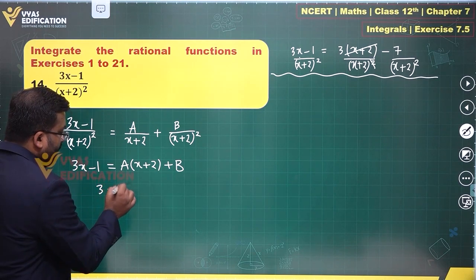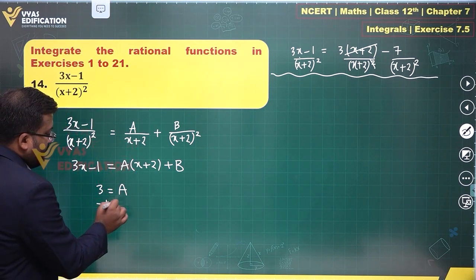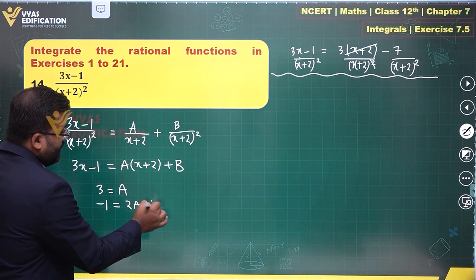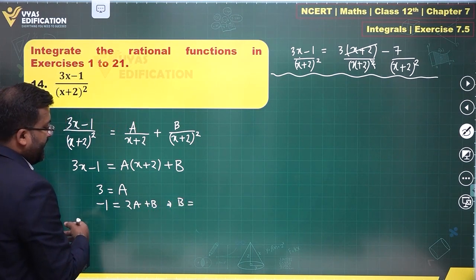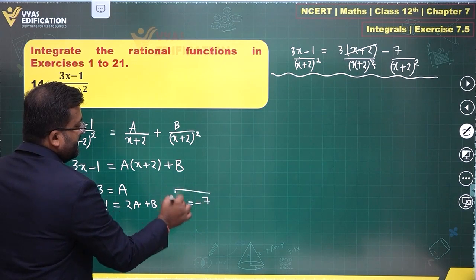Comparing the coefficient of x, 3 is equal to A. Comparing the constant, minus 1 is equal to 2A plus B. This is what you'll get and that tells me B is equal to minus 1 minus 6 which is minus 7.